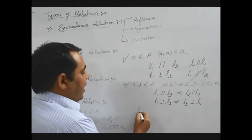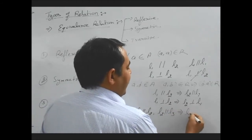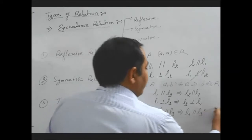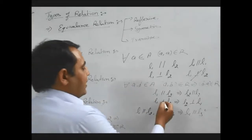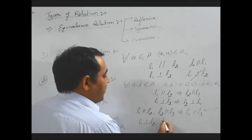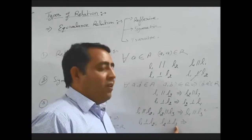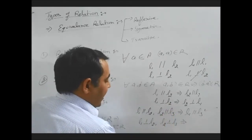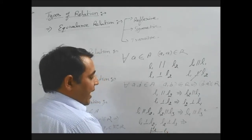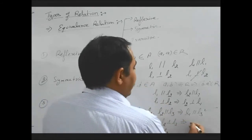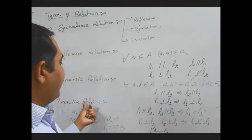For example, if line 1 is parallel to line 2, and line 2 is parallel to line 3, then we can say that line 1 is parallel to line 3. Therefore, this type of relation is a transitive relation. Now for the perpendicularity example: if line 1 is perpendicular to line 2, and line 2 is perpendicular to line 3, can line 1 be perpendicular to line 3? No, it is not possible — L1 and L3 will be parallel lines, not perpendicular. Therefore, this relation is not a transitive relation.